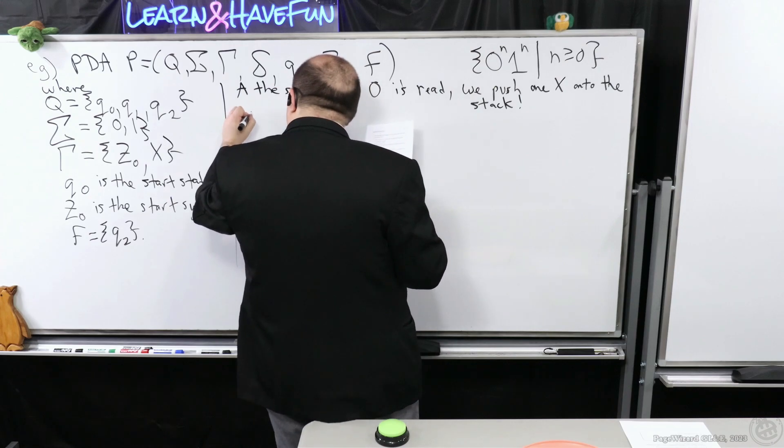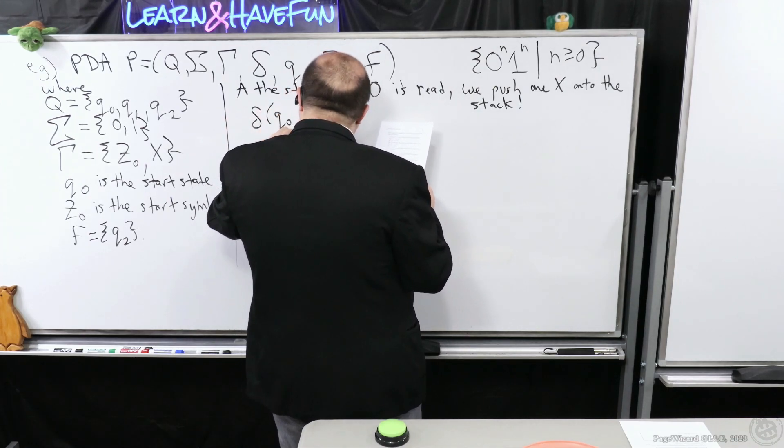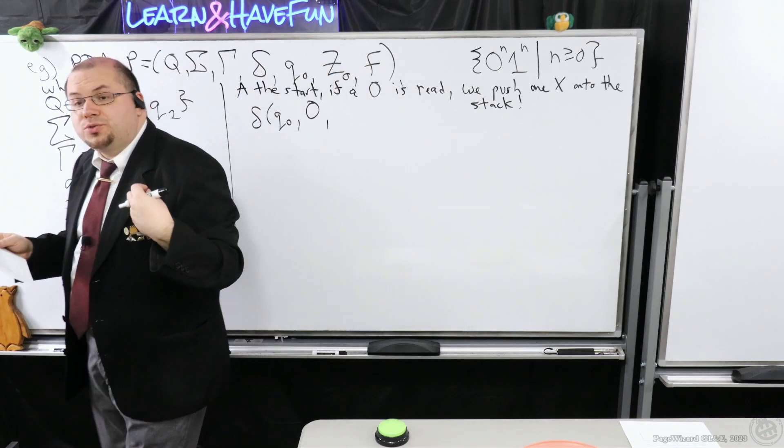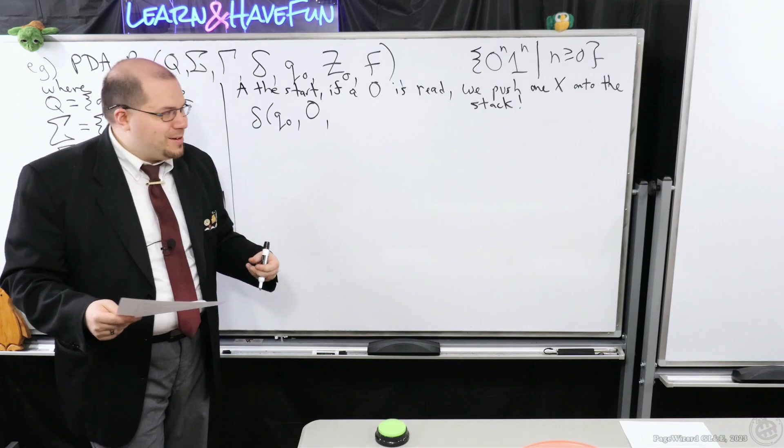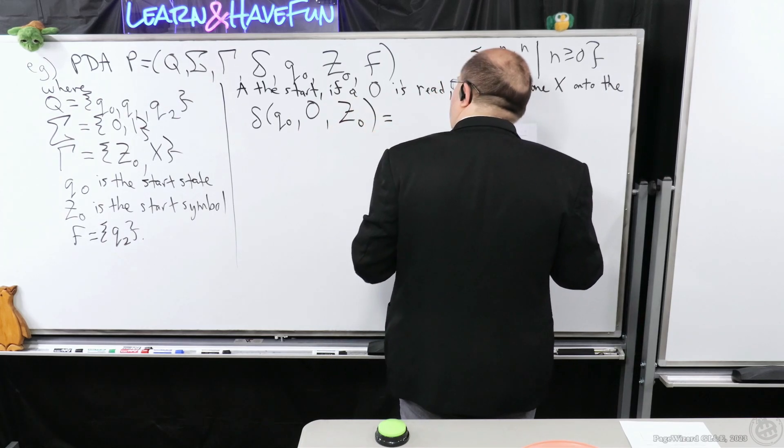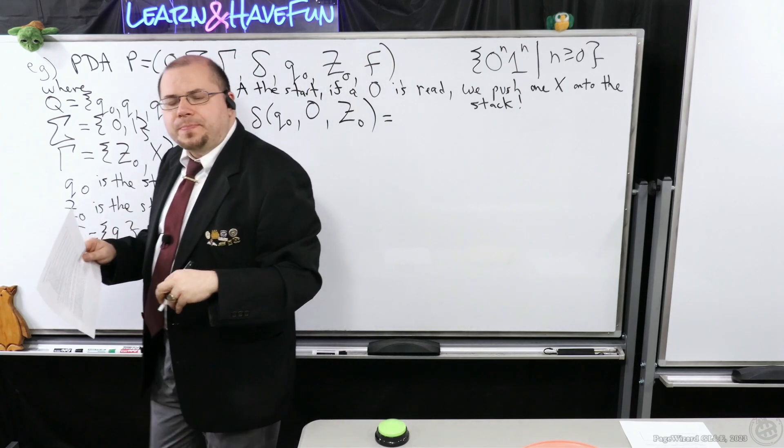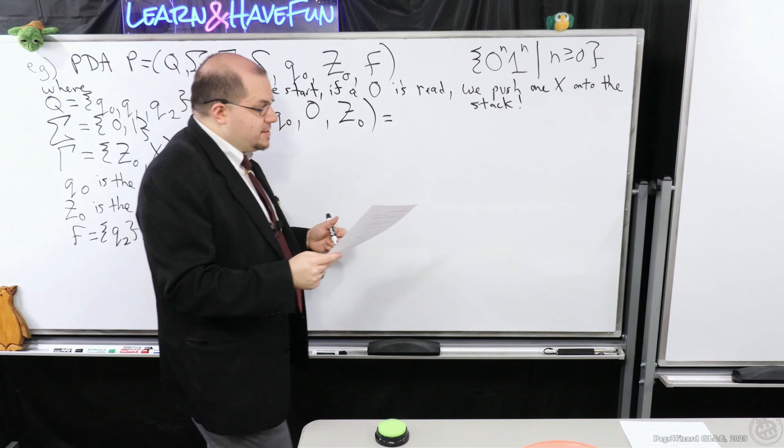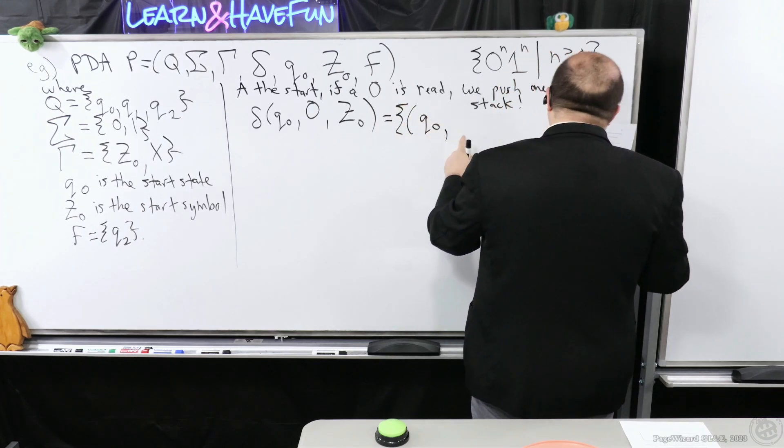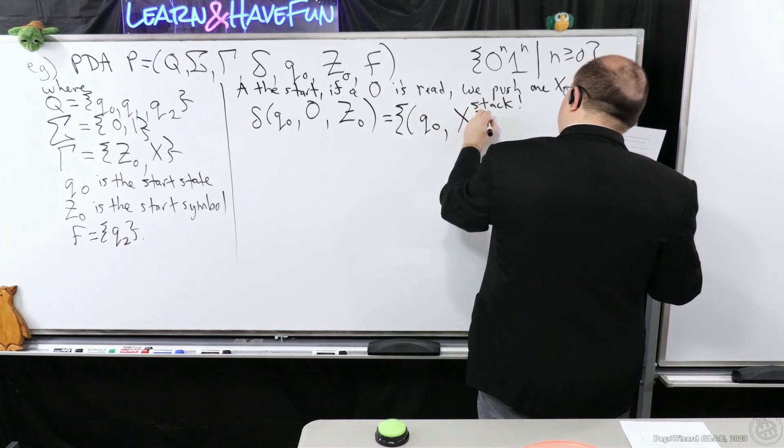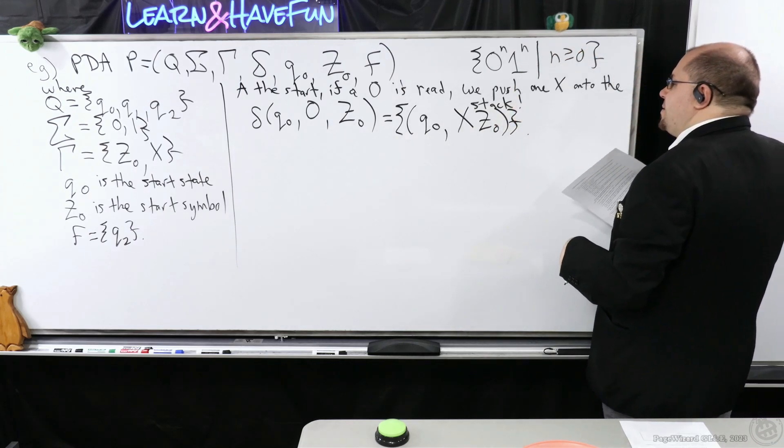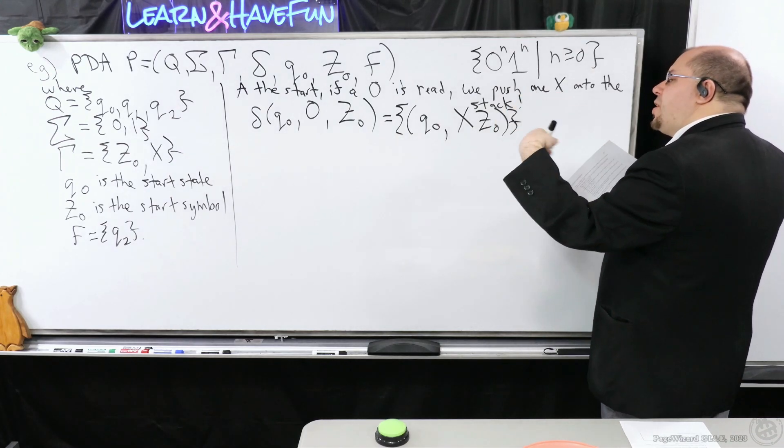So what is this going to look like when we actually use the triples? So we have delta. We're at the start state. We're going to have it where if I see a zero, I'm going to want to gobble up it like a hungry, hungry hippo. And if there is at the top of the stack the start symbol, what did we do? We pushed an x onto the stack. So if we look at the set of pairs that we will have, it says that it's going to stay in q0, and what the stack's going to look like is we're going to push x onto the stack.